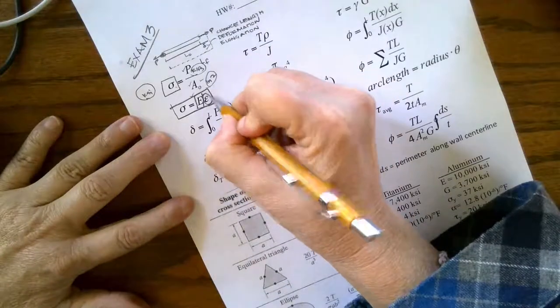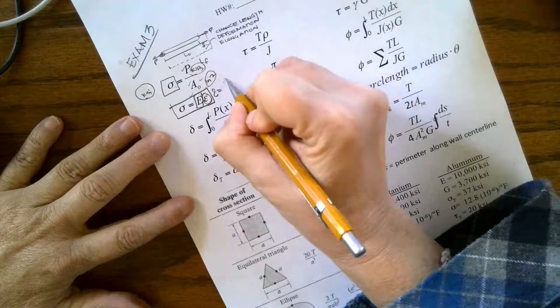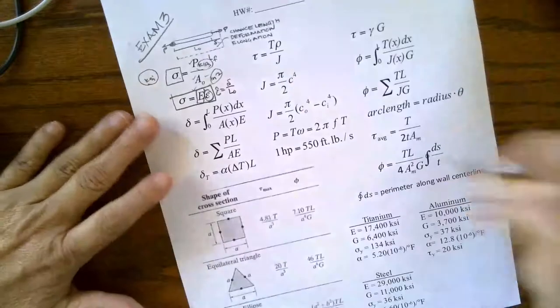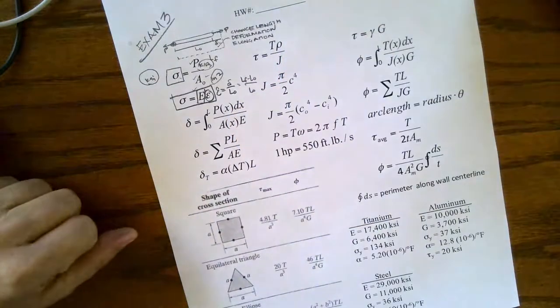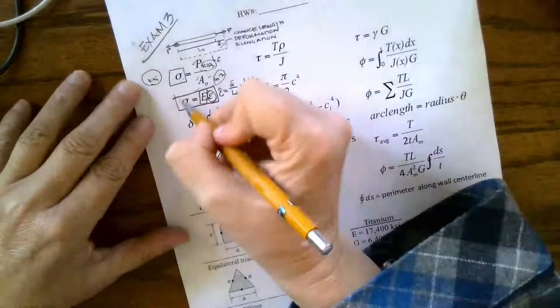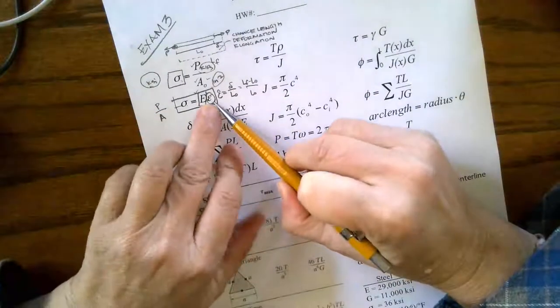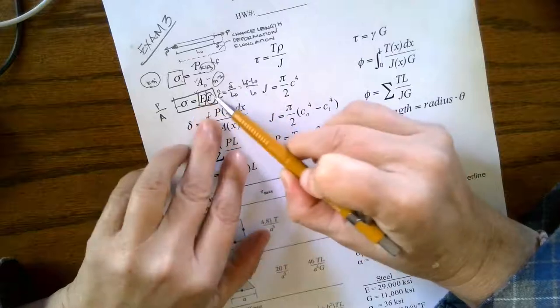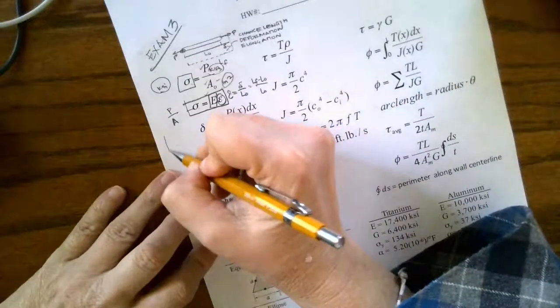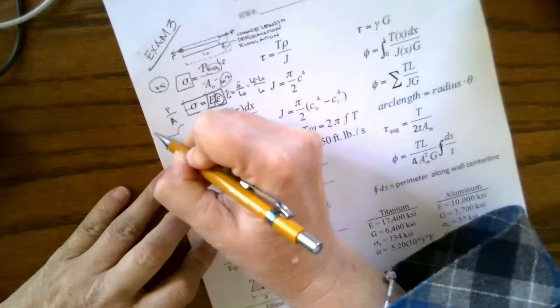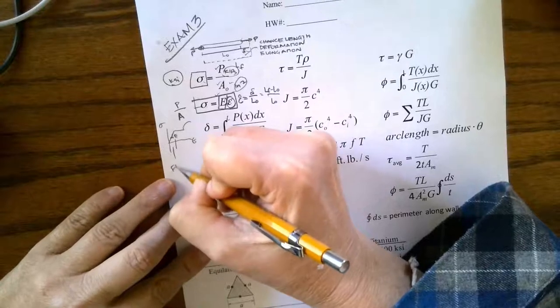We have this relationship of stress equals E times strain. Strain is not delta, strain is not deformation. Strain is the ratio of that change in length to my original length, or length final minus length initial over length initial. The stress is that force that I'm applying to an area - that doesn't matter what material I'm using. But this strain, this change in length per unit length, does matter. E, modulus of elasticity, is the slope of our stress-strain curve.